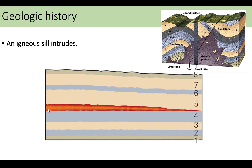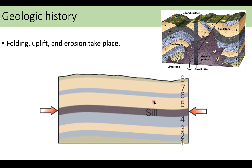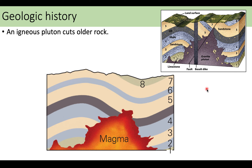First, an igneous sill intruded between layers four and five. Then the sill hardened, there was folding, uplift, and a little erosion on the surface — we start to see that folding pattern in all of the layers, including the sill. Because the sill is included in the folding pattern, we know the sill was already there before the folding happened. After the folding and even more erosion, there was a magma intrusion — a pluton. Since the pluton cuts through the sill and the layers, the sill was there first. But the pluton is not folded, meaning the folding happened before the magma intrusion.